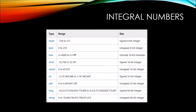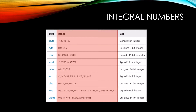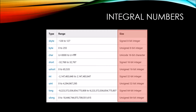Let's take a look at integral numbers first. We can see on the left-hand column we have a type — the actual declaration word you need to use to declare what type of number it is. The range indicates the different values you can assign to that type, and the size column indicates how much memory is occupied by that type.